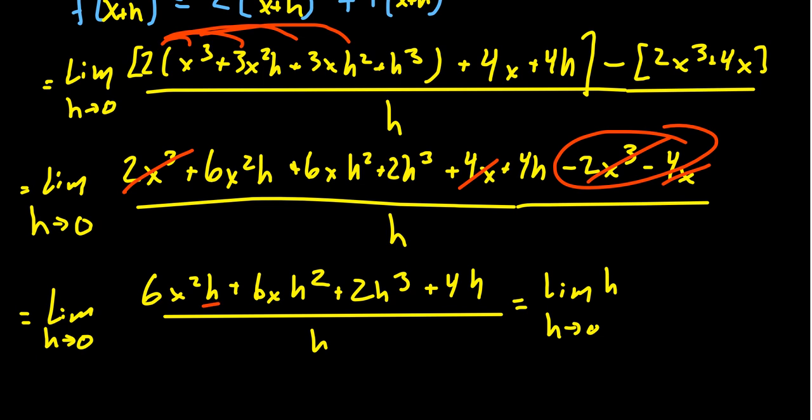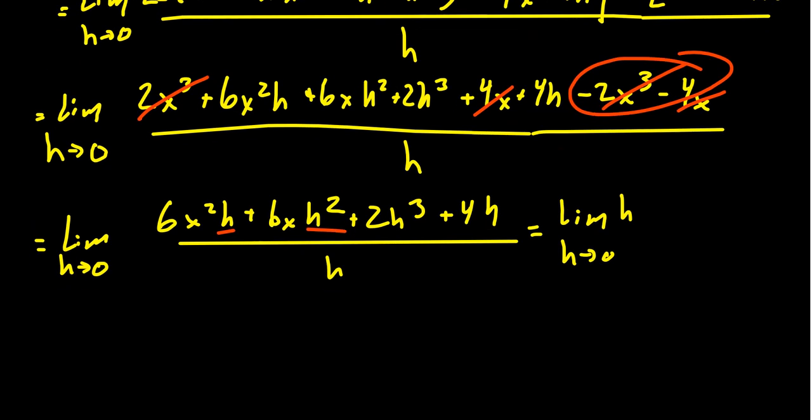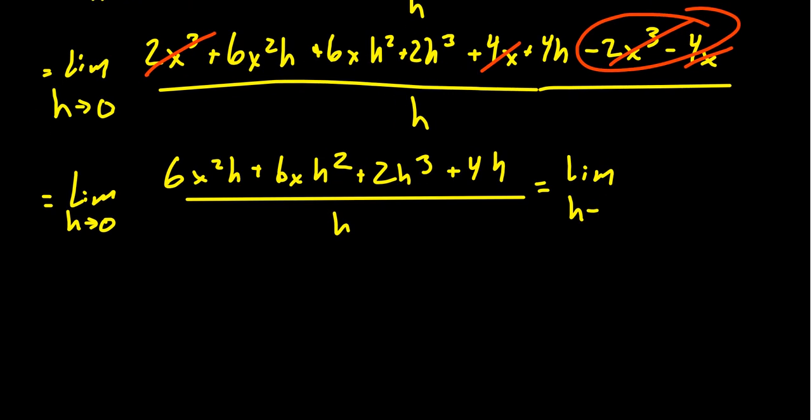You'll now notice that everything in the numerator that didn't cancel out is actually divisible by h. We could factor out the h. Look at it here. You have a factor of h, 2 factors of h, 3 factors of h, a factor of h. We can factor out the h, leaving behind 6x² + 6xh + 2h² + 4. We'll put it down here.